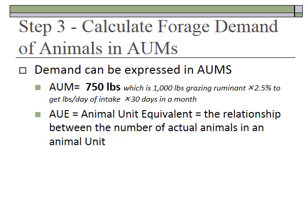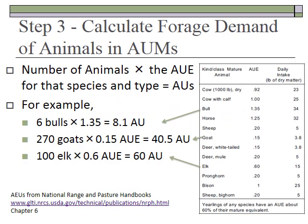You can also calculate forage in terms of AUMs. An animal unit month is 750 pounds, so if you know how many pounds you have, divide by 750 to get AUMs of forage. You can also use animal unit equivalents — the relationship between the number of actual animals and the number of animal units. For example: 6 bulls at 1.35 AUE equals 8.1 animal units; 270 goats at 0.15 AUE equals 40.5 animal units; 100 elk at 0.6 AUE equals 60 animal units. These numbers are from the National Range and Pasture Handbook, a very handy guide for stocking rates and grazing decisions.